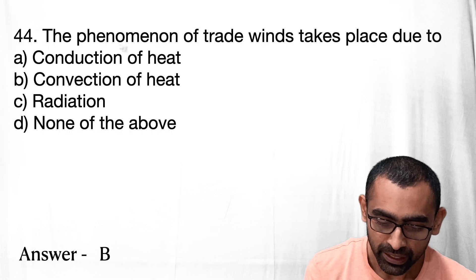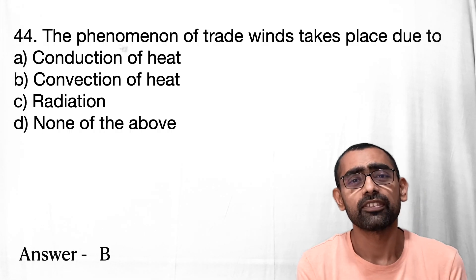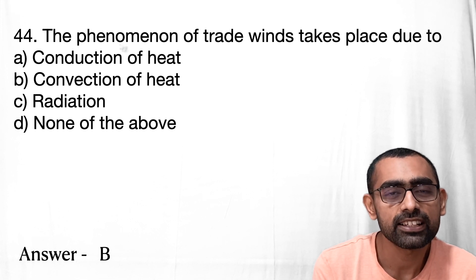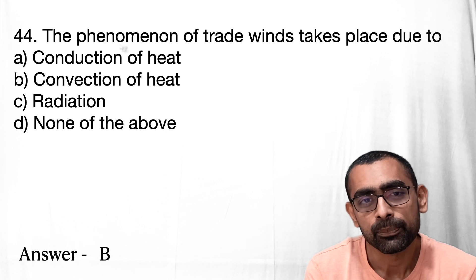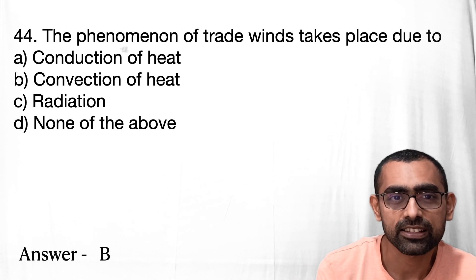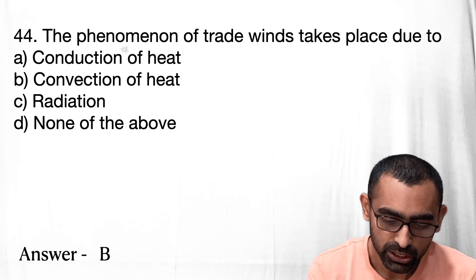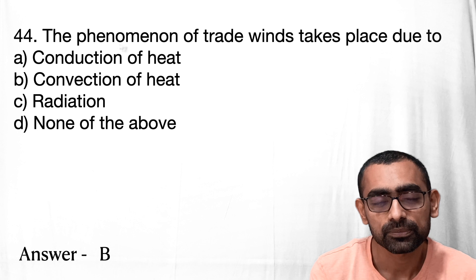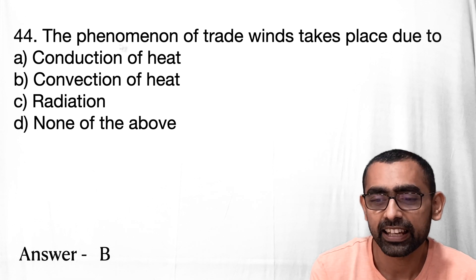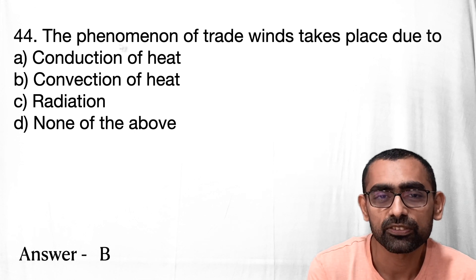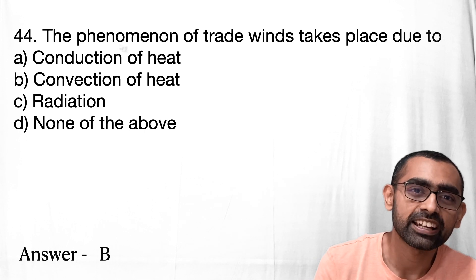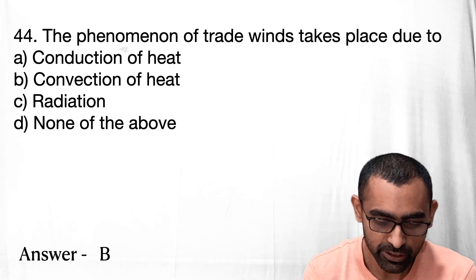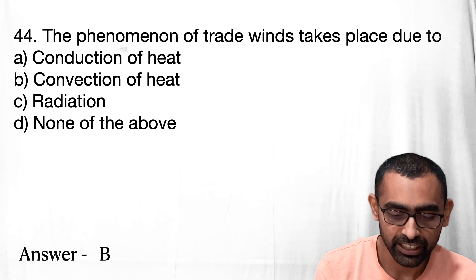Question 44 is about the phenomena of trade winds, a very important part of geography. Winds generally blow from high pressure areas to low pressure areas. When sufficient sunlight hits an area, the earth warms up, the air above it gets heated and expands, creating a low pressure area, causing air from surrounding areas to move toward it. Trade winds are essentially caused by convection of heat.